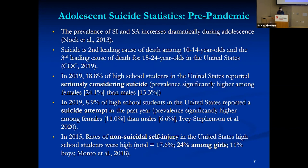Adolescence is a particularly high-risk time. Based on the latest data, suicide is the second leading cause of death among 10 to 14-year-olds and the third leading cause among 15 to 24-year-olds. In 2019, based on the Youth Risk Behavior Survey, 18.8% — almost one in five — high school students reported seriously considering suicide. Around 9% of high school students reported having made a suicide attempt, which is close to one in ten.